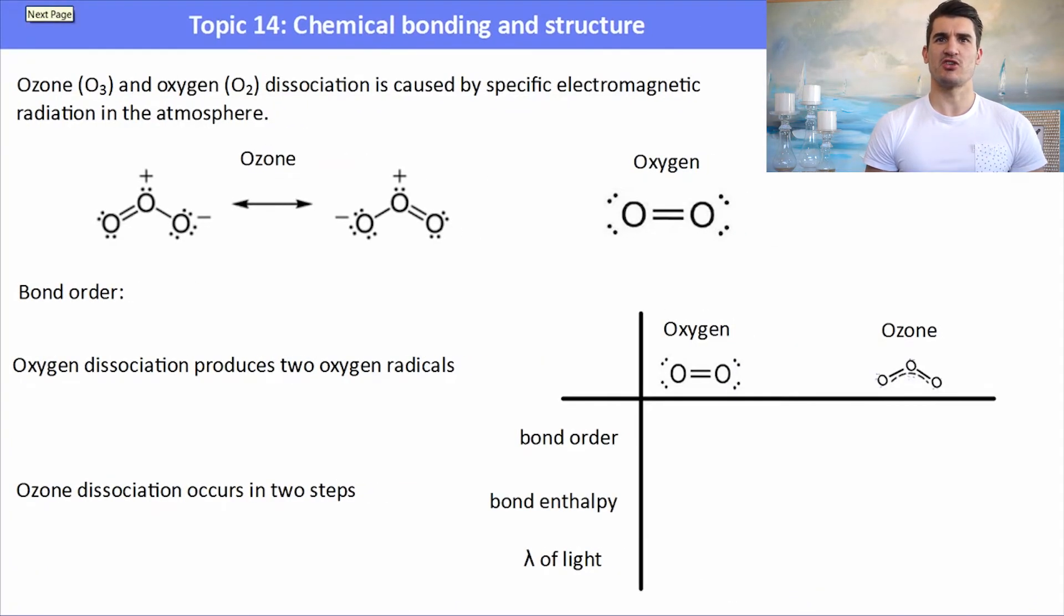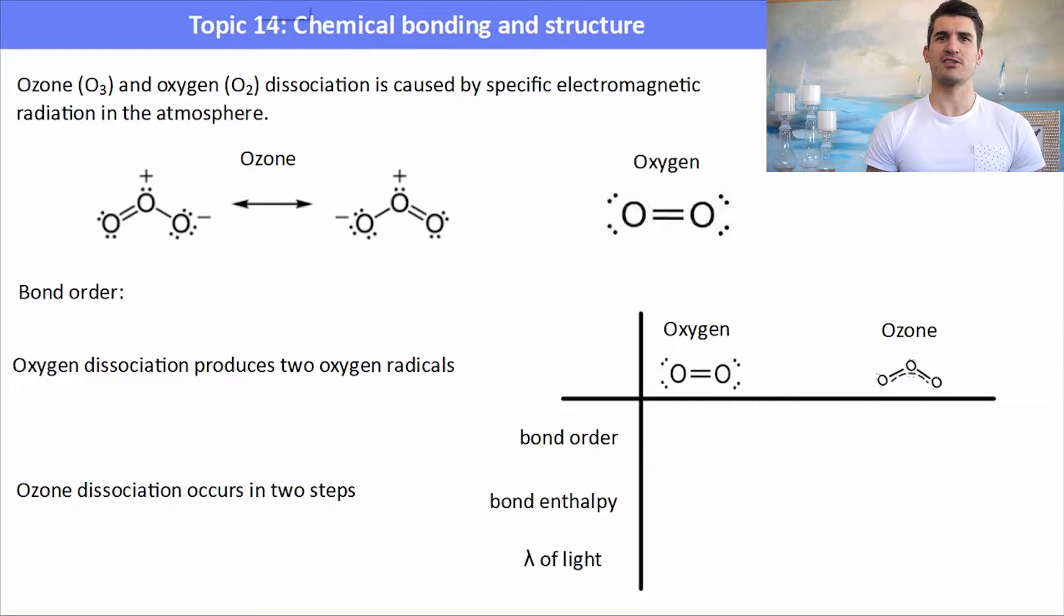Ozone and oxygen dissociation is caused by specific electromagnetic radiation in the atmosphere. Here's our two diagrams, our ozone and our oxygen. If we look at the bond order, the bond order just indicates how many bonds we have between each of the atoms. Here we have with the oxygen a non-polar molecule, two oxygens with a double bond between them. The ozone has three bonds between two oxygen atoms, two other oxygen atoms, so it has a bond order of 1.5.